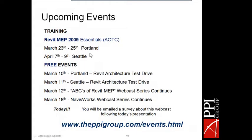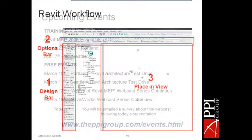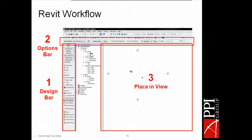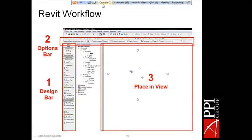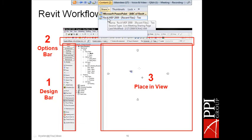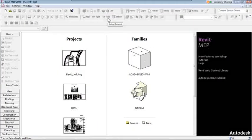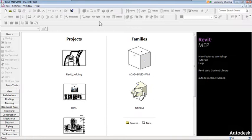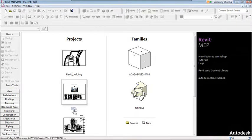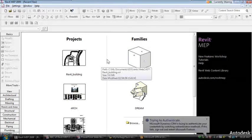We're not drafting anymore — we're modeling. Let's switch over to Revit and walk through the process of opening and working with an architectural model. This is Revit MEP, and the greeting window shows a list of projects and families I've recently been working on. You can always close this window.